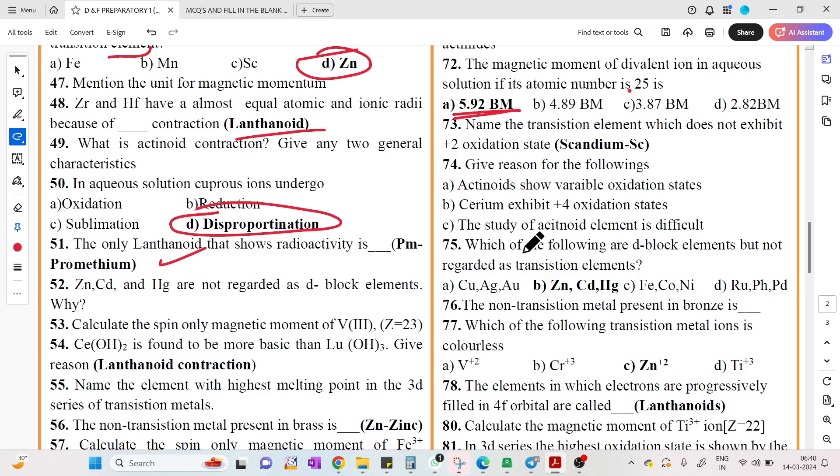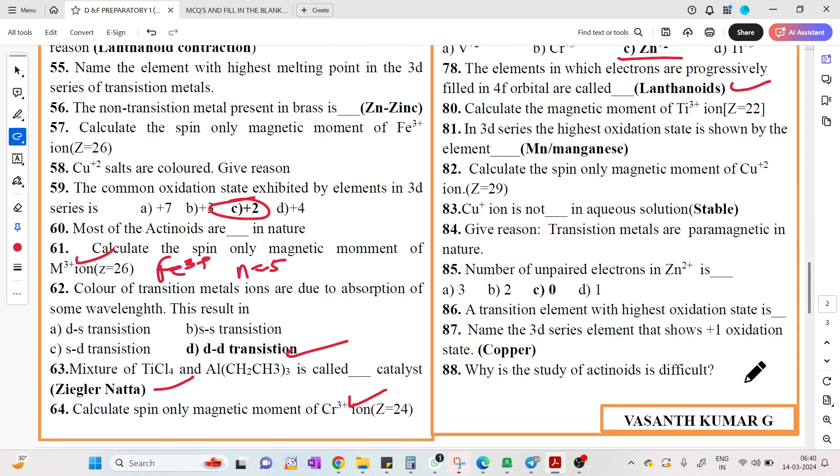Magnetic moment of divalent metal ion having atomic number 25 is 5.92. Give reason type questions: which d-block element is not regarded as transition element? Which transition metal ion is colorless? Zinc 2+.